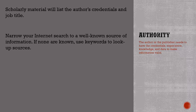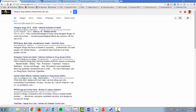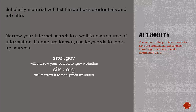Looking at the domain of a website can narrow your results to better sources. Using information from a .gov or .edu domain will at least allow you to gather information from the U.S. government or an educational institution. When you find information online, you will want to verify the author's credentials by reading the About Us page.